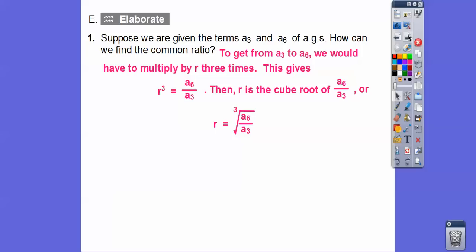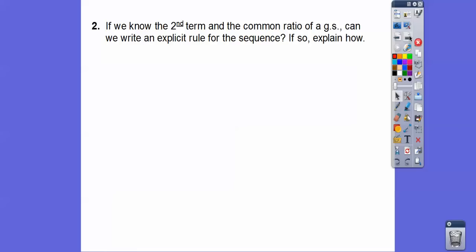So then since r cubed is equal to that number, whatever that number is, then we just take the cube root of that right there. Let's see. The next question was, if we knew the second term and the common ratio of a geometric sequence, can we write an explicit rule for the sequence? If so, explain.